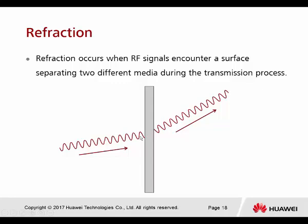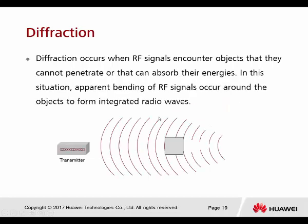Refraction also occurs when the signal encounters the surface separating two different media during transmission. Diffraction occurs when the signal encounters an object that cannot be penetrated or absorbed — totally blocking the radio frequency. When such an object is in the middle, it creates a shadow zone where receivers can no longer receive any signal, as all radio waves are spread by the obstacle.